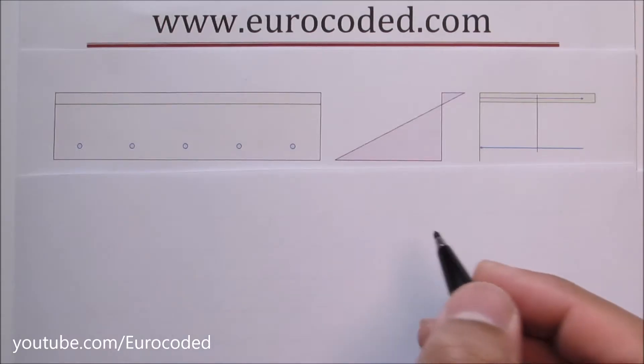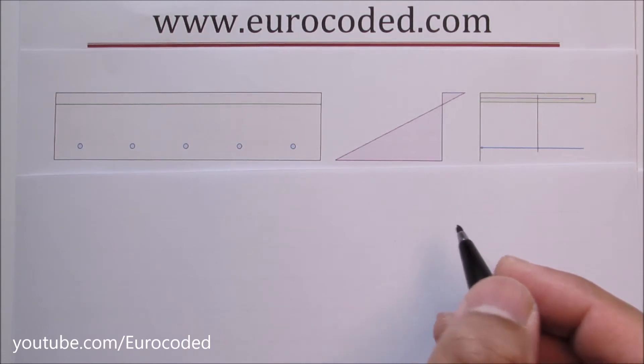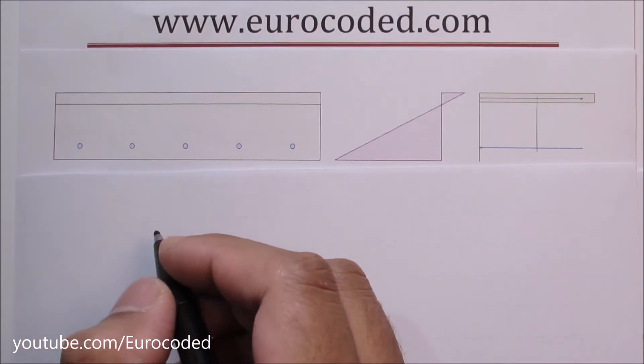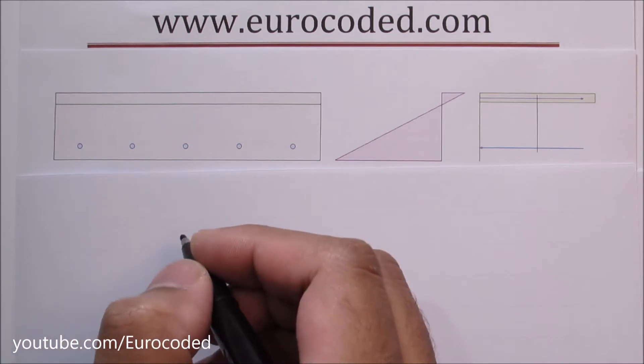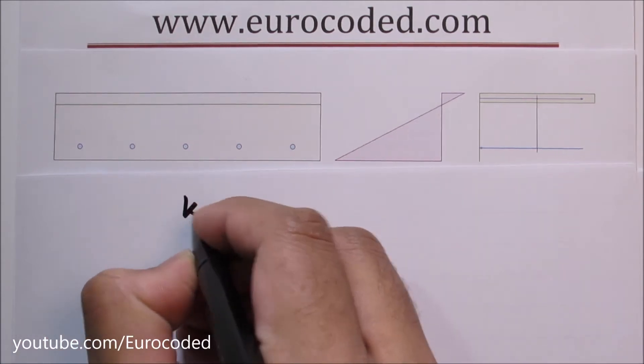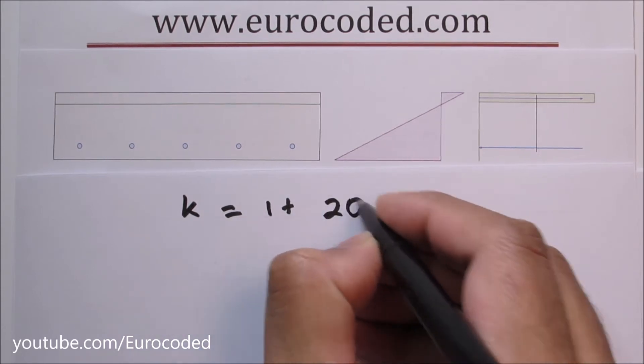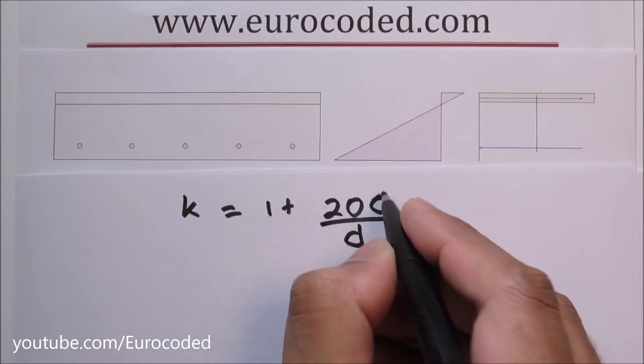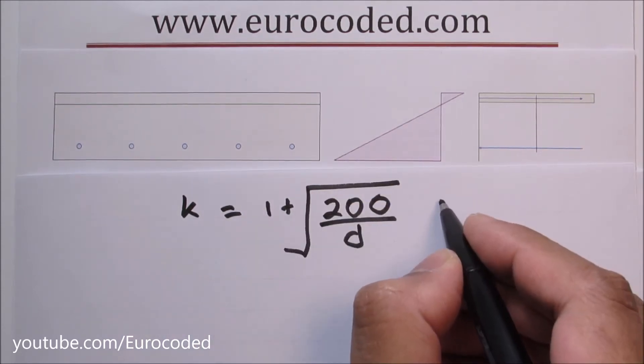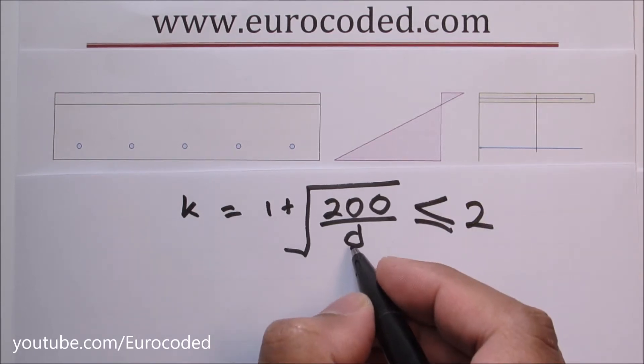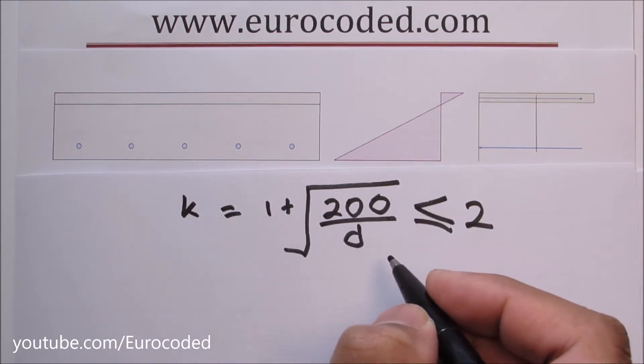First what we are going to do is calculate the k factor. This is to take the absolute depth of the concrete slab into account. k is equal to 1 plus the square root of 200 over d. This should be less than or equal to 2. d is the effective depth in millimeters.